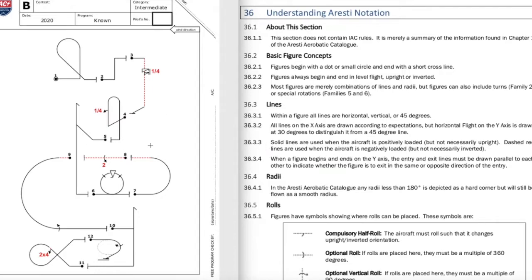So all solid lines is a positive G loading. You're pulling the aircraft and you're getting positive G. Whenever you see these dotted lines, that's going to tell you that you're going to be negatively loading or your inverted flight. So for example, figure four, it's solid here. So you're going to be pulling that half a loop. If you saw red dotted lines you would be pushing and your canopy would be on the outside of that Humpty.